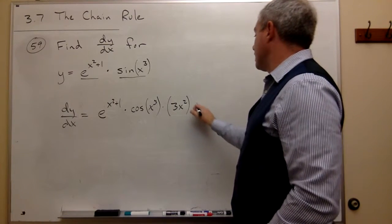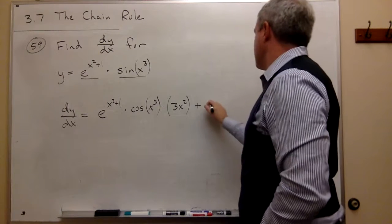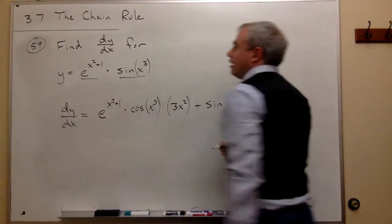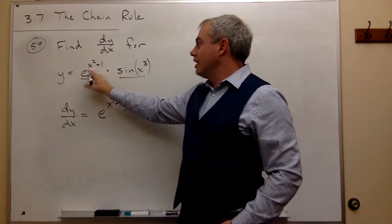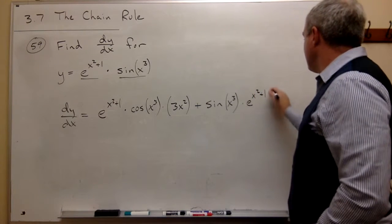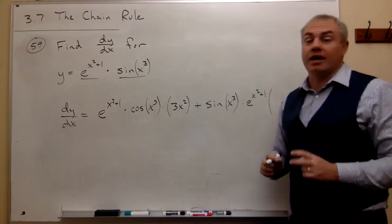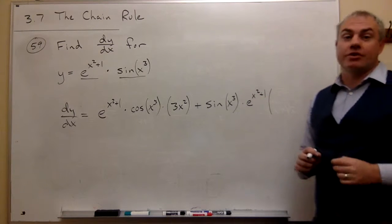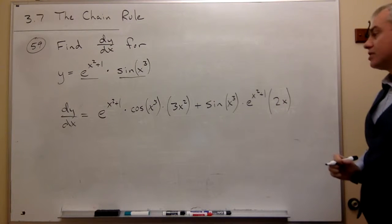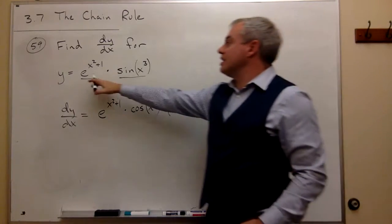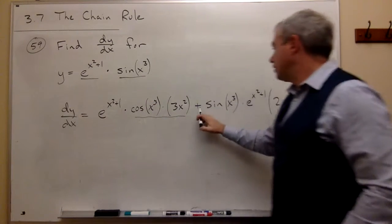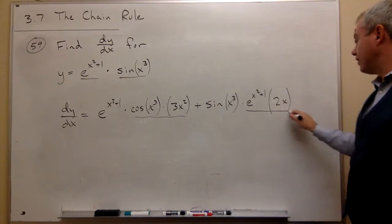The product rule says we now add the second function left alone — sine of x cubed — times the derivative of the first. The way we take the derivative of e to a power is we leave it alone, write it as e to that power again, then multiply by the derivative of the power. The power in this case is x squared plus 1, and the derivative of x squared plus 1 is 2x. So we multiply by 2x. We took the first times the derivative of the second, plus the second times the derivative of the first, and we have our derivative.